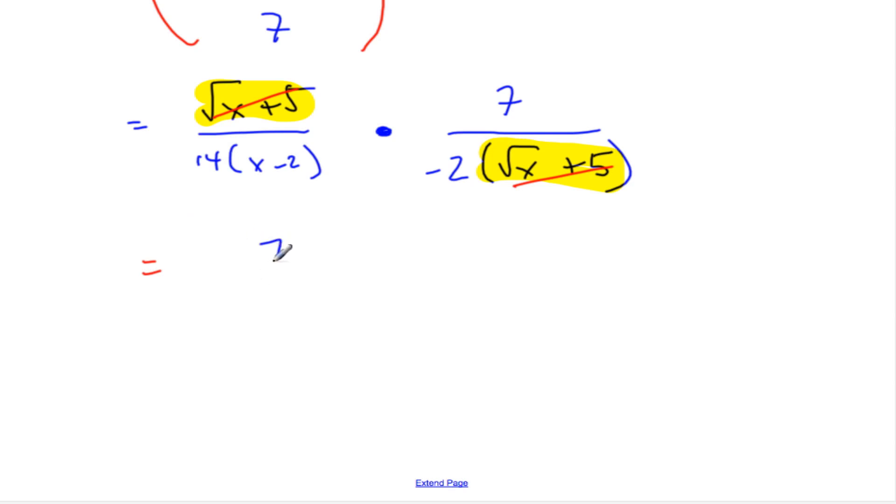Getting rid of that. I have now a 7 over a 14 times an x minus 2 times another negative 2 here. This times, times, and times. Well, what do you see, Mr. Cole? Well, 7 over 14 looks like a half to me. That is one half. So that cancels to 1, to a 2. And so the top is simply 1. And we can multiply the numbers, right? So 2 times negative 2, negative 4. 4 over x minus 2.